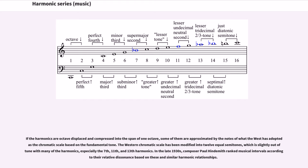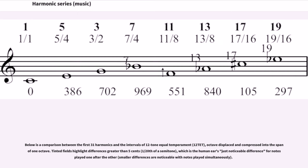In the late 1930s, composer Paul Hindemith ranked musical intervals according to their relative dissonance based on these and similar harmonic relationships. Below is a comparison between the first 31 harmonics and the intervals of 12-tone equal temperament, octave-displaced and compressed into the span of one octave. Tinted fields highlight differences greater than five cents, one-twentieth of a semitone, which is the human ear's just noticeable difference for notes played one after the other. Smaller differences are noticeable with notes played simultaneously.